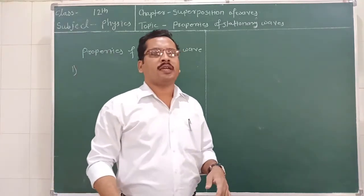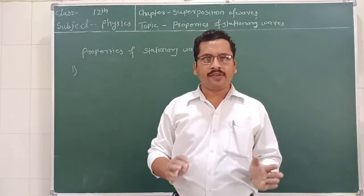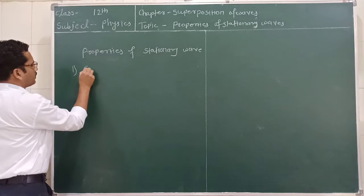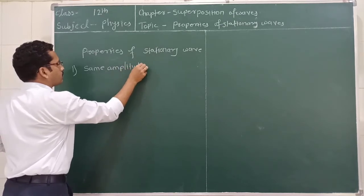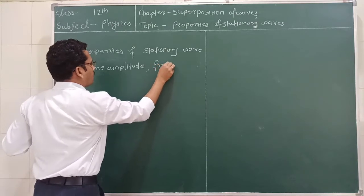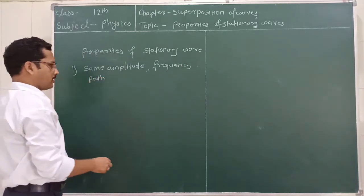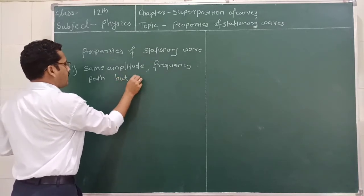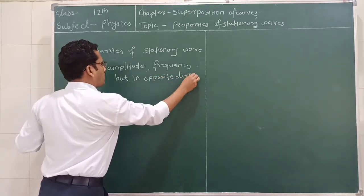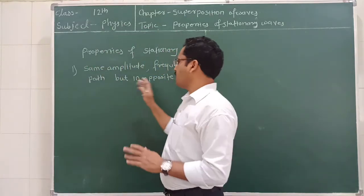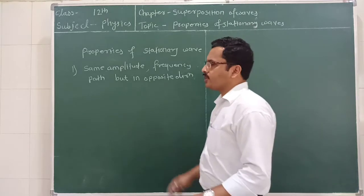The first property is nothing but the definition of how stationary waves are formed — two waves having the same amplitude, same frequency, and travelling along the same path but in the opposite direction, they form a stationary wave. This is the first property of the stationary wave.